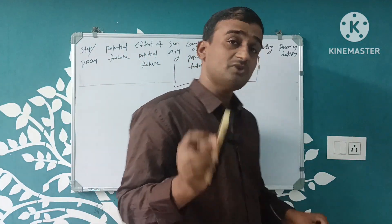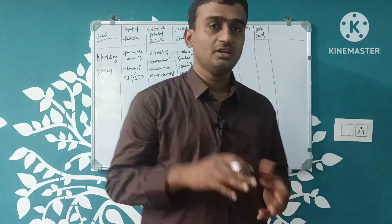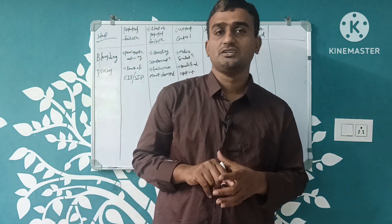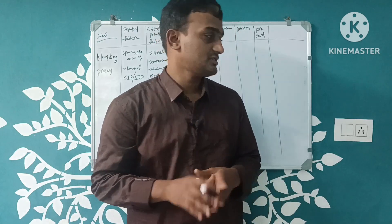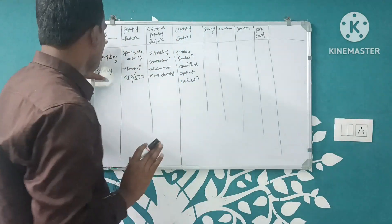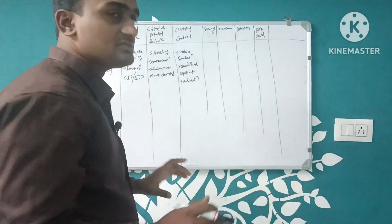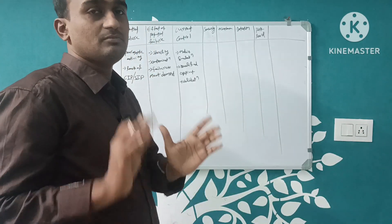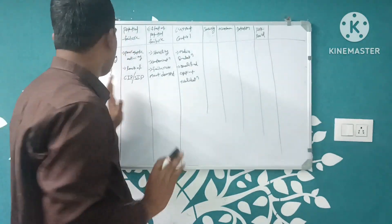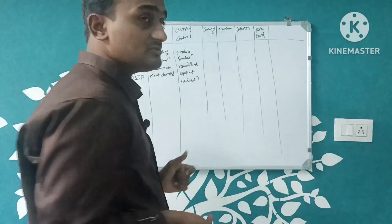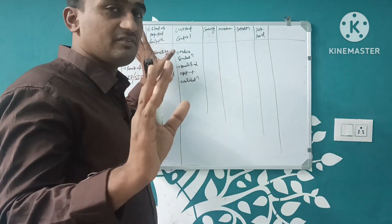Let's take an example. This is a very easy example from FMEA. Say we have a process — a formulation process, a compounding process, or a blending process. We can use a parenteral formulation, IV route — this is a sterile product manufacturing process. The process step is our starting point, and we identify the potential failure. What are the chances of failure? Aseptic behavior is very important.